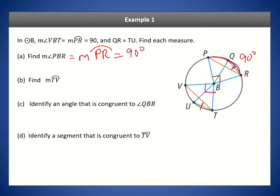For part B, we find the measure of arc TV. Arc TV equals its central angle, which is angle VBT, and that equals 90 degrees. This is again from the theorem in lesson 10.1 that states an arc measure equals its central angle measure.